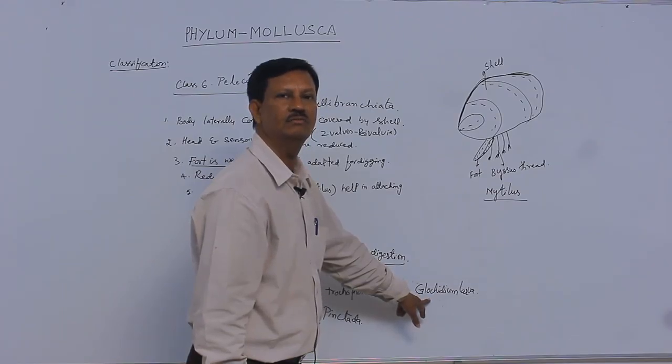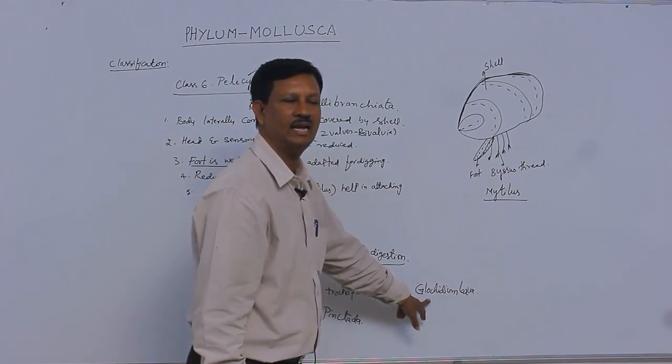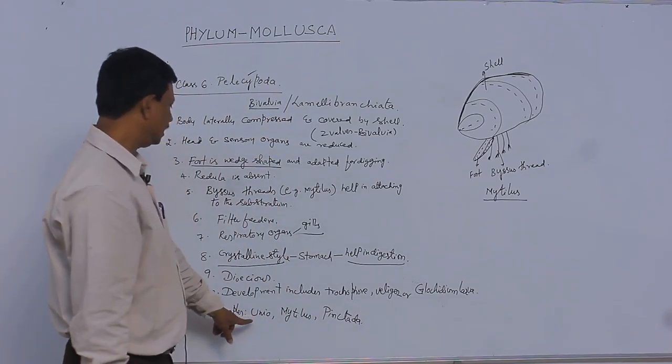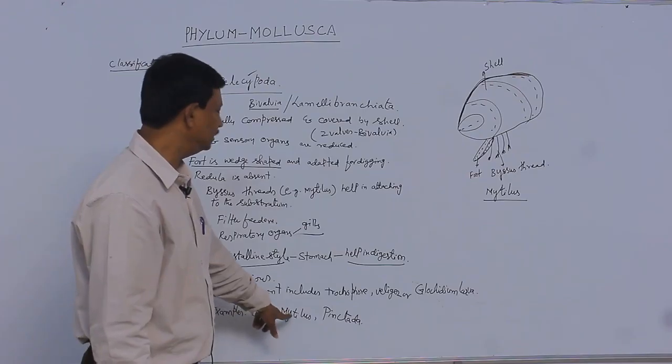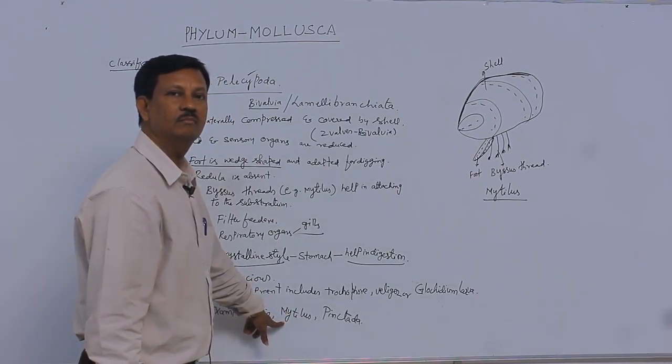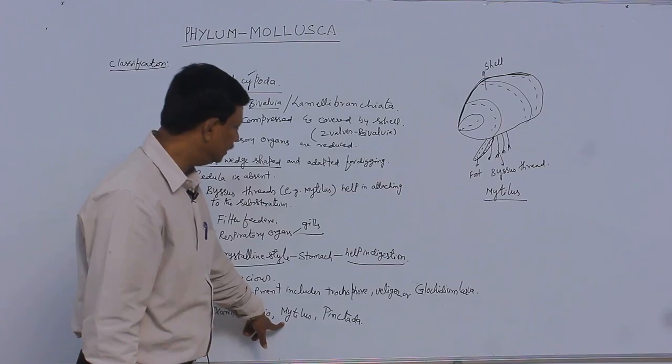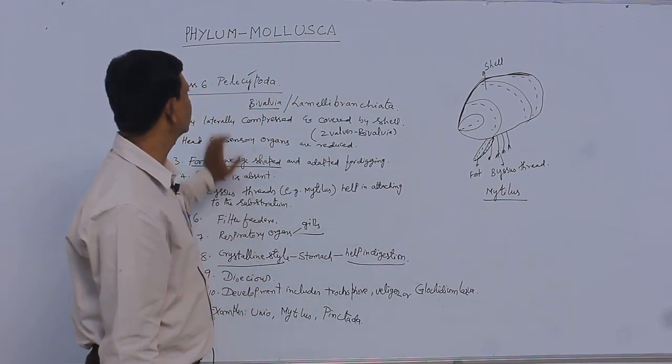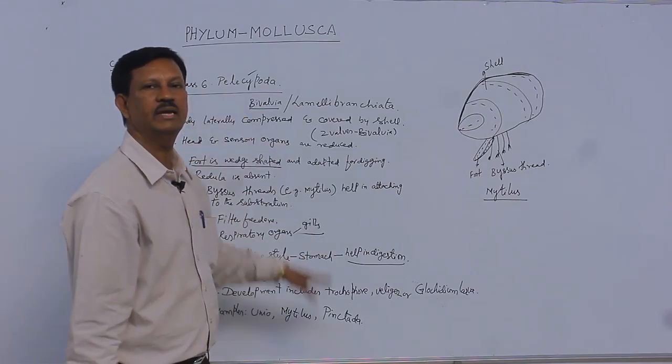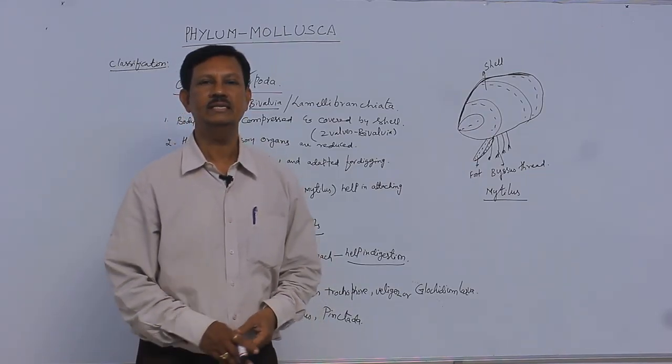Examples include freshwater mussels. Mytilus is found in marine water. Pinctada is also present. These are the main characteristics of class Pelecypoda.